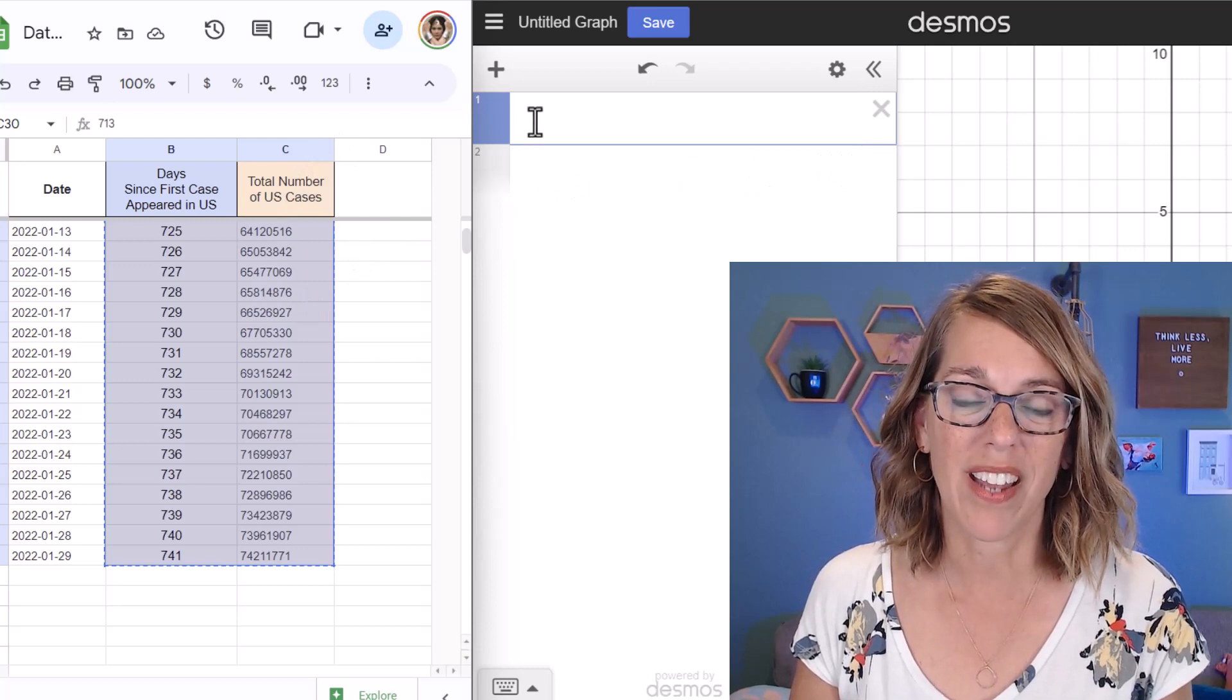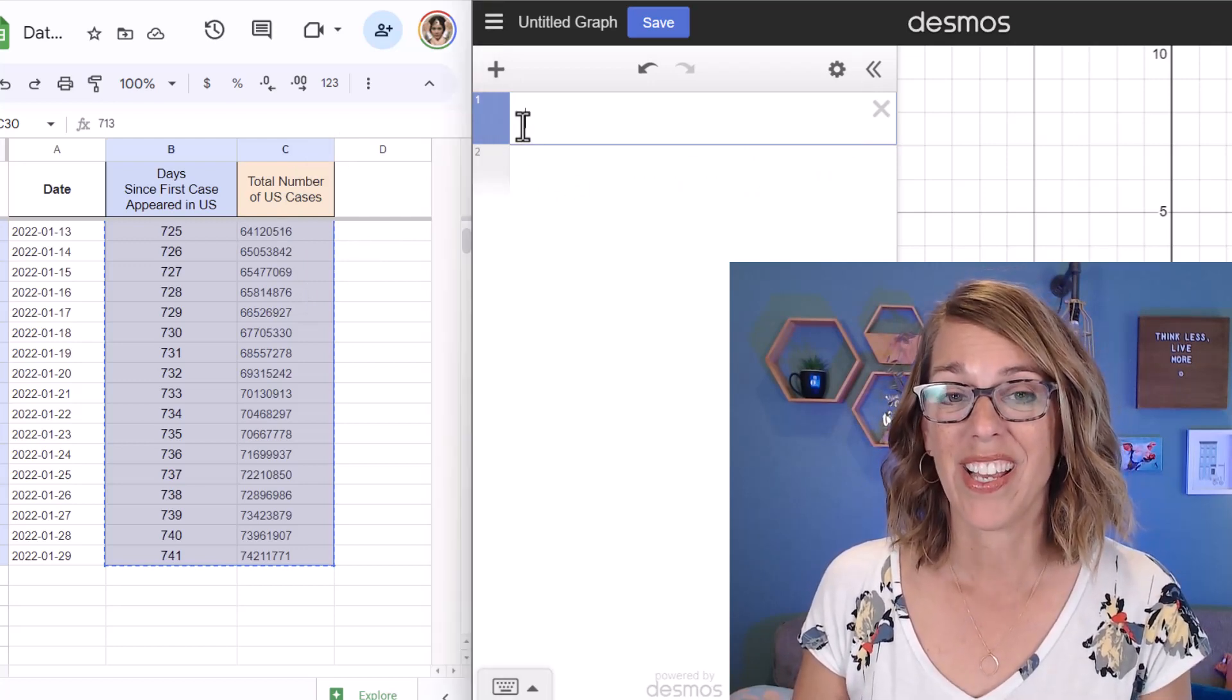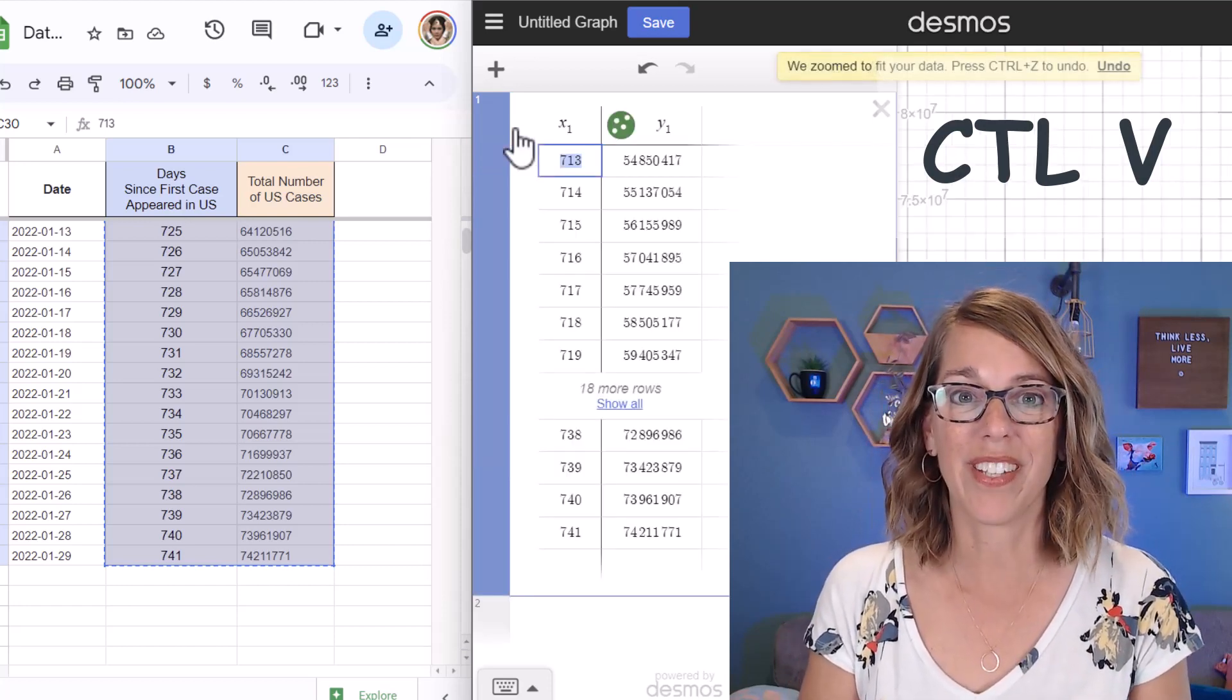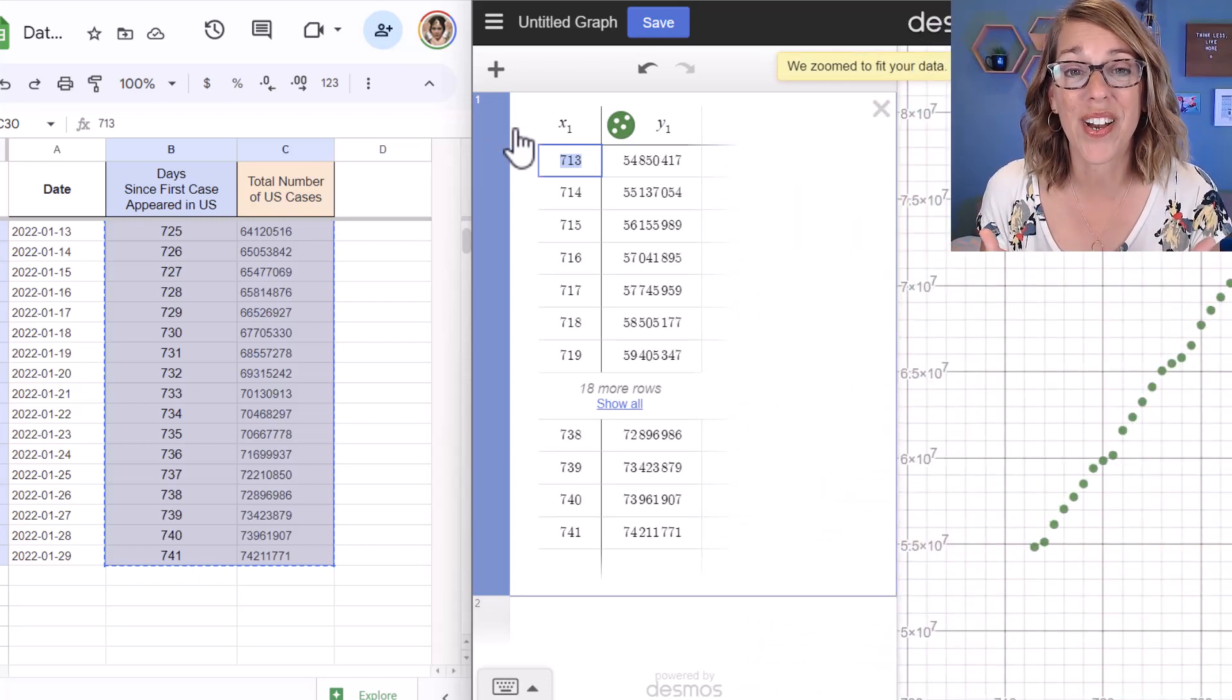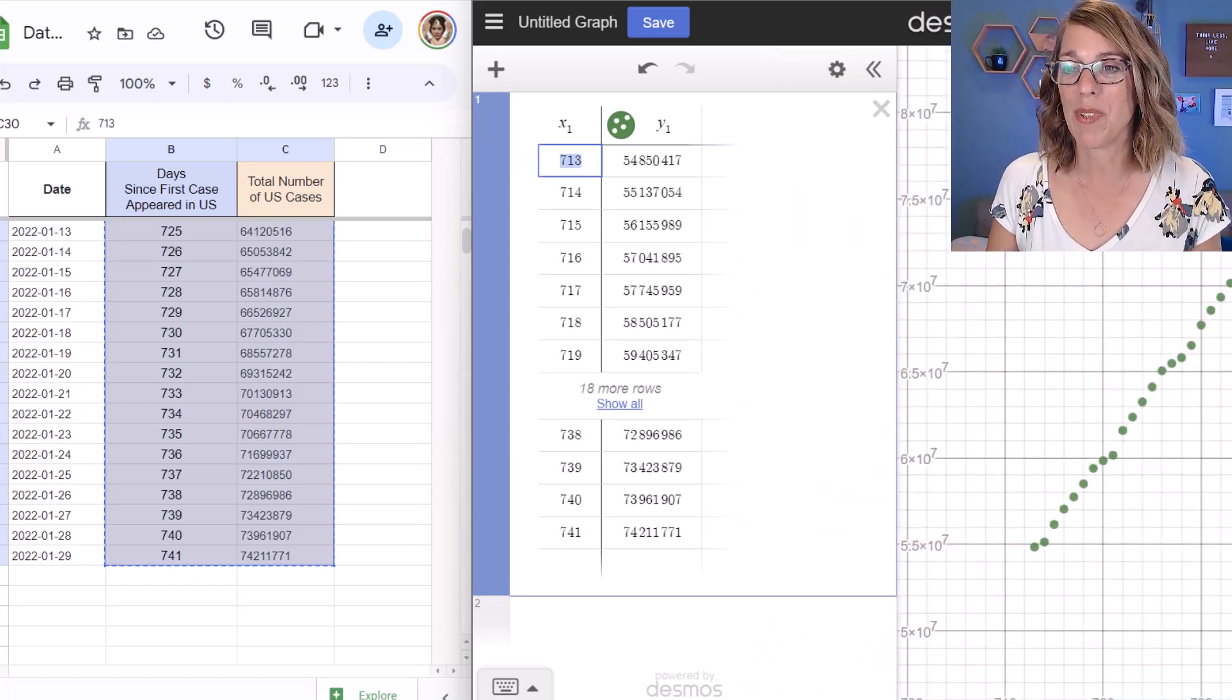Once I've got that copied, I can go back over into Desmos and paste my data. I'm going to do a Control V, V as in Victor, to paste that data, and Desmos does a super great job of getting this data into a table, and it also gives me the graph.